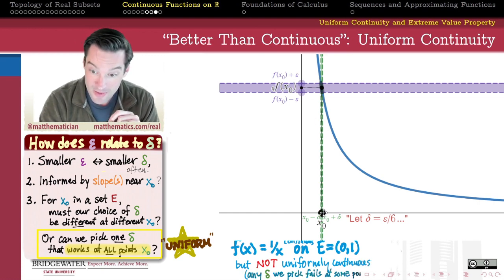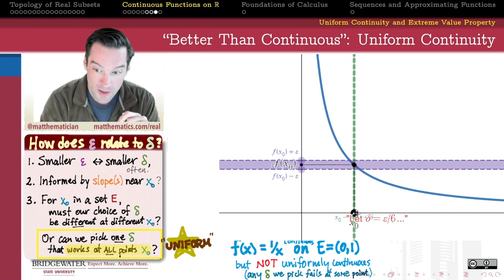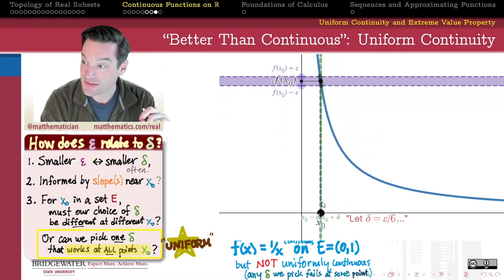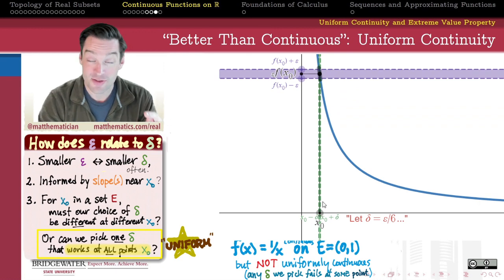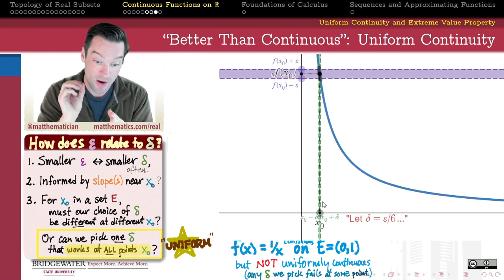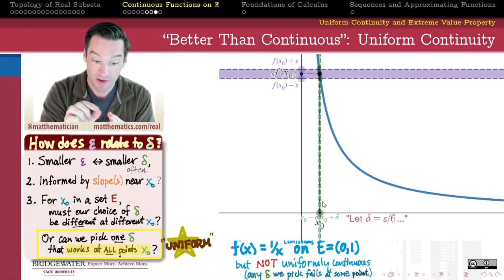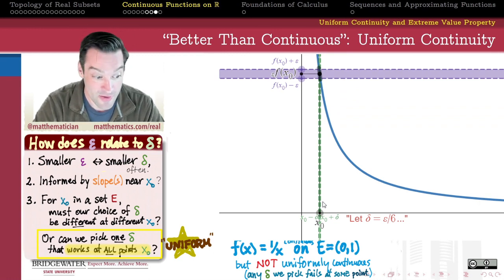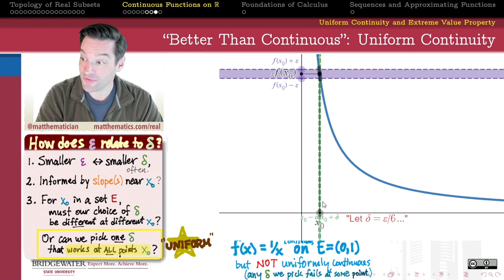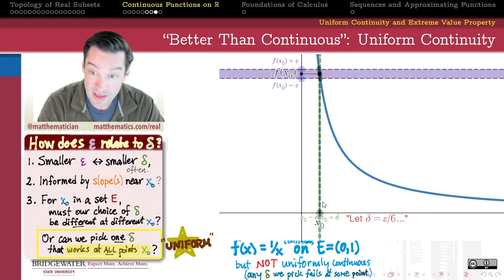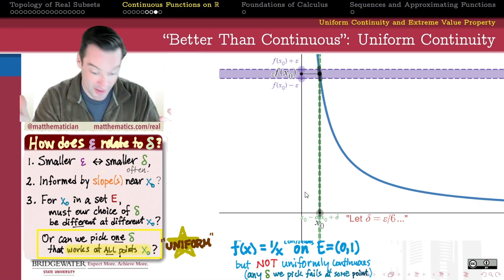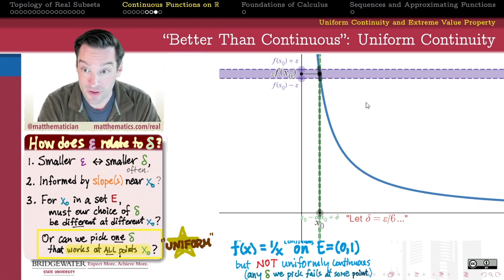And yet we can show and maybe I'll do this in a separate video that this function is not uniformly continuous because no matter what I pick for delta in response to your epsilon there'll be some place, some x value where that delta is no longer small enough to make all of the y values for the x values that are delta close to x0 within an epsilon distance of f of x0. Any delta that I pick is going to fail somewhere on the domain. And in the case of the reciprocal function the reason for that failure seems to be the fact that this function is kind of blowing up toward a vertical asymptote.